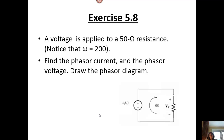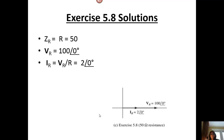A third exercise: now we're going to put the voltage across a resistor. We expect there will not be any phase change between our voltage and our current because we're going across a resistor. We can use standard Ohm's law: Z equals V over I, I equals V over R. For a resistor, Z is equal to R. Solving for the current — V over R — we get 2 with an angle of zero. Notice when we plot it, everything is in phase; the current and the voltage are both in phase with each other.